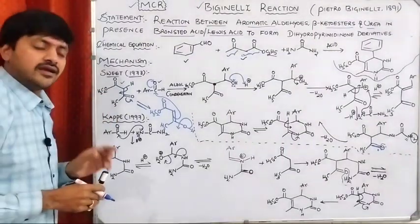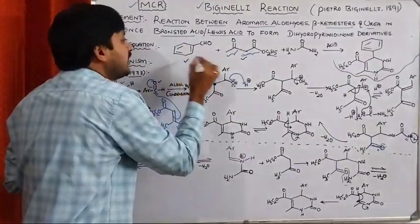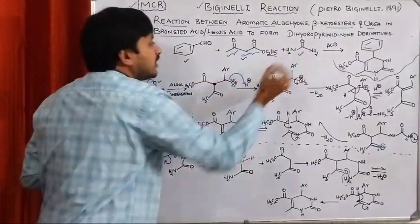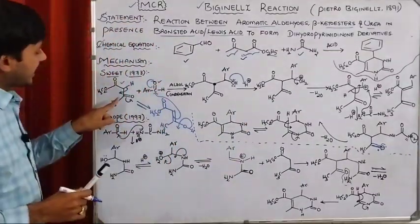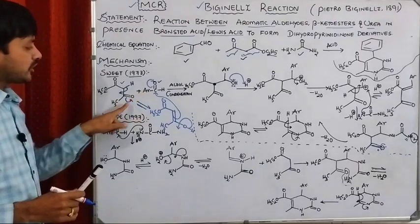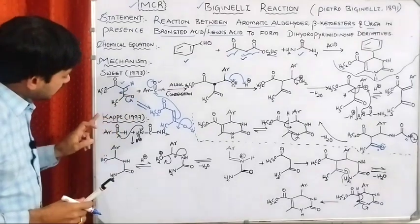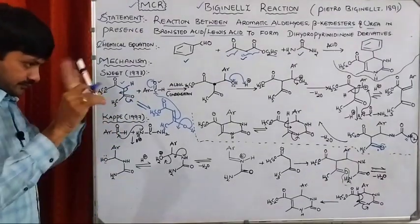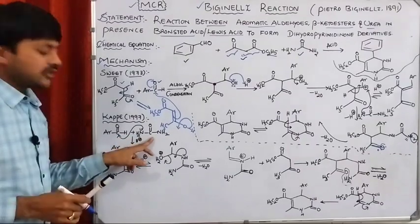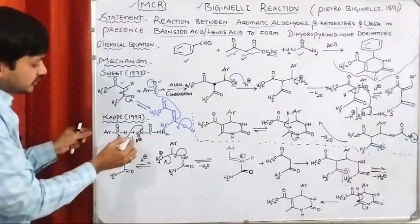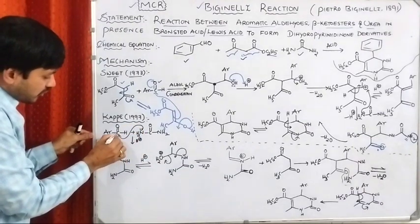According to Kappe, initially what happens is the aromatic aldehyde and the urea — these two react together. But according to Sweet, the aromatic aldehyde and beta-ketoester react together initially. According to Kappe, the aromatic aldehyde and urea react together first. Initially, nitrogen donates its lone pair of electrons to the carbonyl carbon.